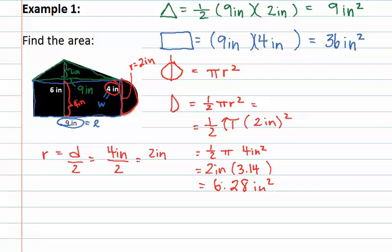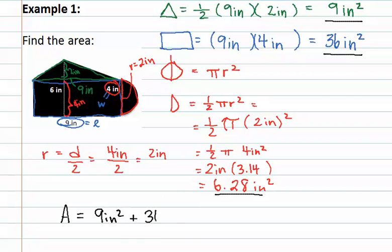We have now found the area of the half circle. Since we have the area of the triangle, the rectangle, and the half circle, and they are all filled in, we want to keep all of these areas in our total. Therefore, our total area is going to be the triangle (nine inches squared), plus the rectangle (36 inches squared), plus the half circle (6.28 inches squared). When we add all of these together, we find that the total area is 51.28 inches squared.